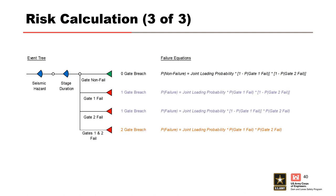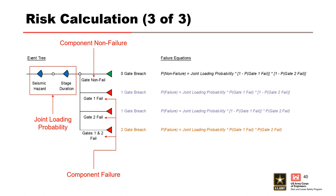We'll be using an event tree model to facilitate the risk calculations and to ensure that there are no failure scenarios that we're missing. This model provides an intuitive graphical depiction of the failure or non-failure of each component and how those failures combine to form different breach combinations. At the front of the tree are the loading variables for the joint loading probability. Each subsequent level represents failure or non-failure of a specific component — a pier, gate, or end anchorage. For the PFM marginal risk calculations, only one component will be present, while for total project risk calculations, all components are included. These levels are collectively exhaustive, containing all possible failure combinations.